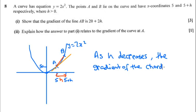So as h decreases, the gradient of the chord will get closer to this perfect gradient here, closer to the gradient of the tangent at A.